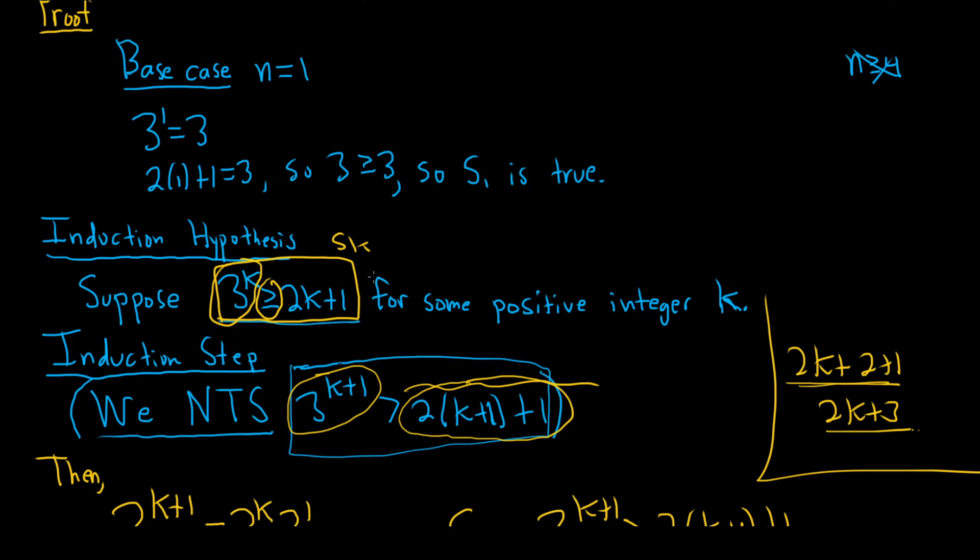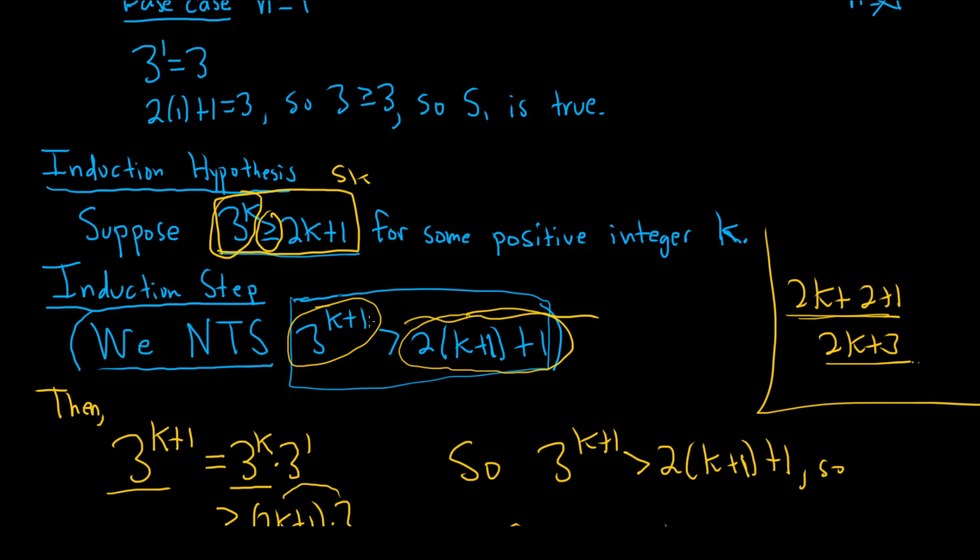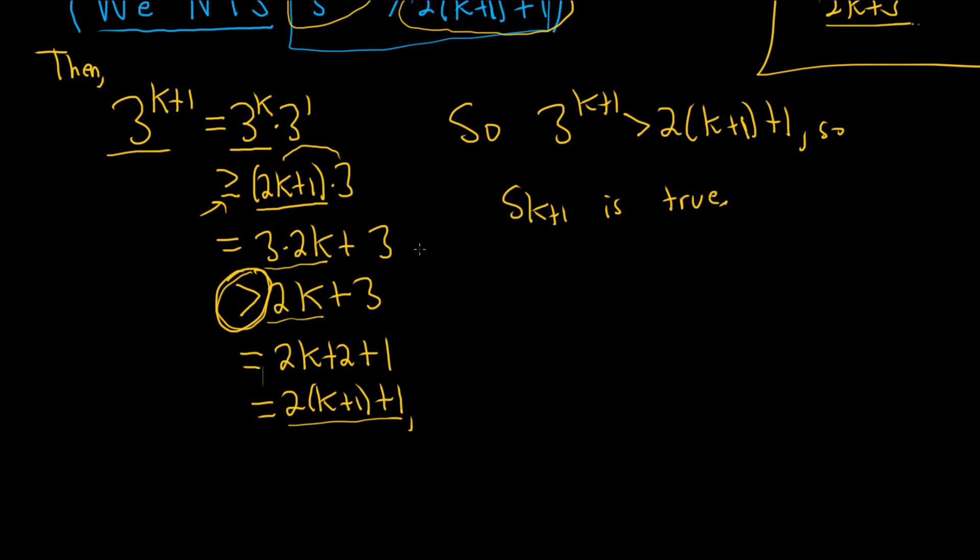Once you're done with all of this, once you do your base case, your induction hypothesis and your induction step, then it's like your glory moment. Because then you just say, therefore, s sub n is true for all positive integers n. And here you get to be fancy and you get to use a symbol to end a proof. I use a box with an x. Some people use QED. You can make up your own symbol. That's it.